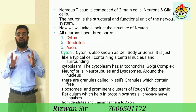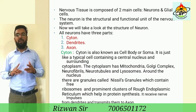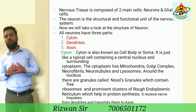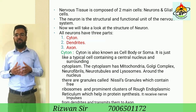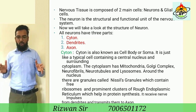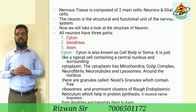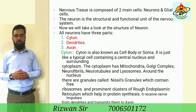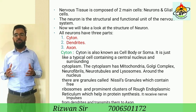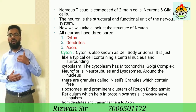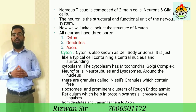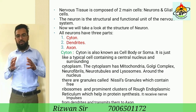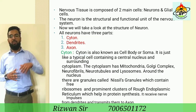All neurons have three parts: cyton, dendrites, and axon. The cyton is also known as the cell body or soma. It is just like a typical cell containing a central nucleus and surrounding cytoplasm. The cytoplasm has mitochondria, Golgi complex, neurofibrils, neurotubules, and lysosomes. Around the nucleus there are granules called Nissl granules, which contain free ribosomes and prominent clusters of rough endoplasmic reticulum that help in protein synthesis. The cyton receives impulses from dendrites and transmits them to the axon.